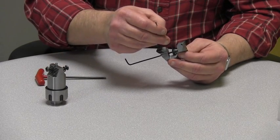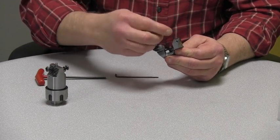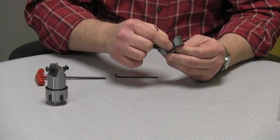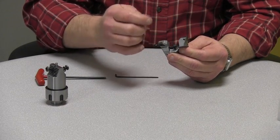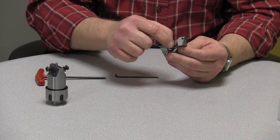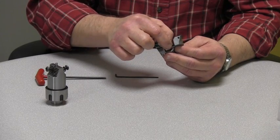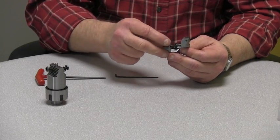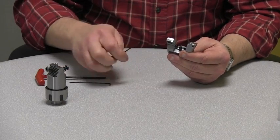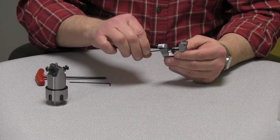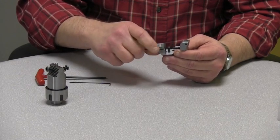At this time, we want to loosen the three set screws on the centering ring of the adjusting screw. We want this temporarily to float. Continue removing the blades.